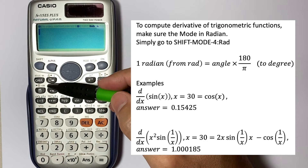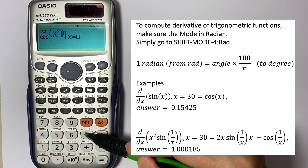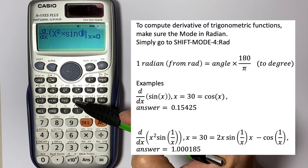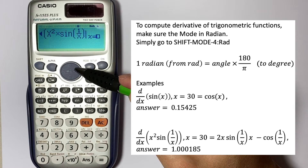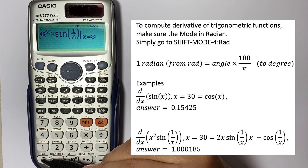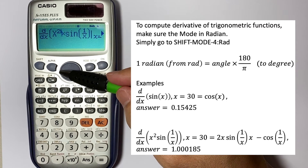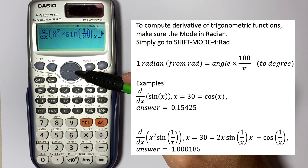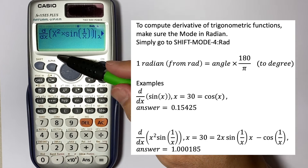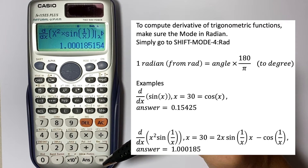Now for the derivative of x² · sin(1/x), multiply by the fraction 1 over x, with x equal to 30. Going back to check the equation, we can see there are two open parentheses on the left but only one closing parenthesis on the right — that's the syntax error. We need to close both, giving two open and two closed parentheses. The result is 1.000185.